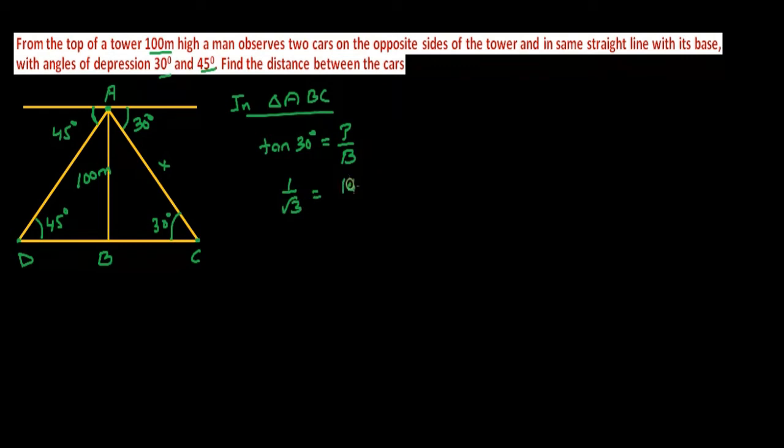The base is BC. Let us suppose this is BX. So I am taking the length BC as X. If you cross multiply, you will get X equal to 100 root 3 meters.